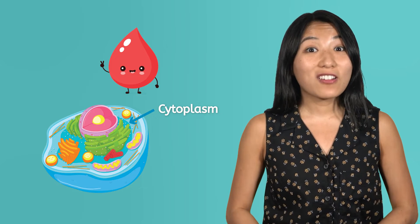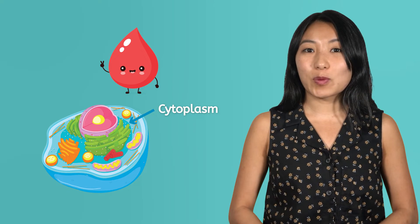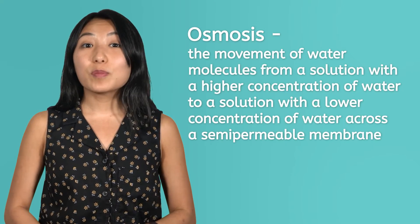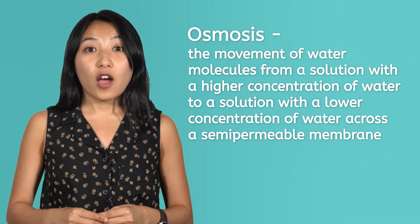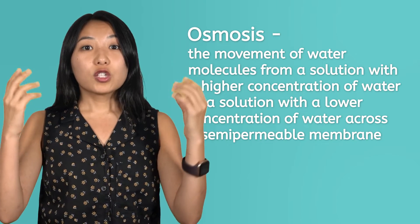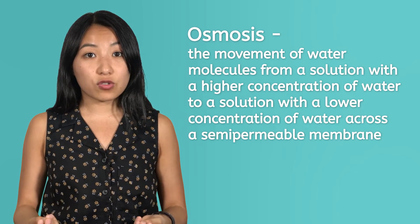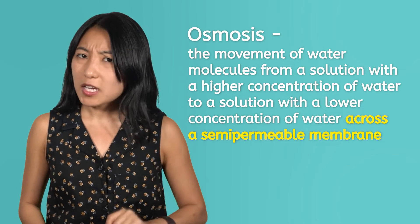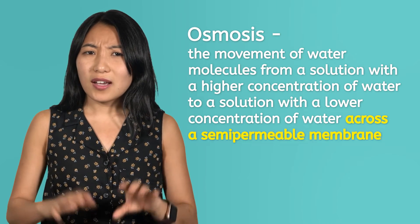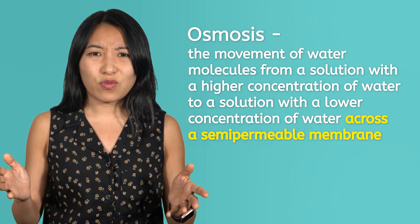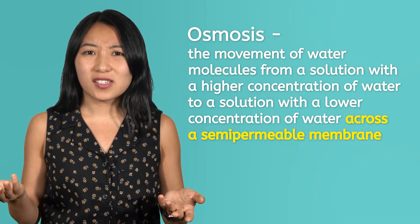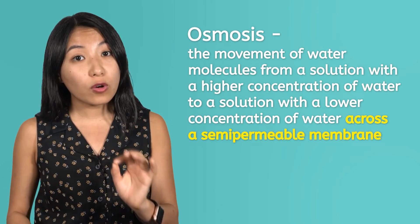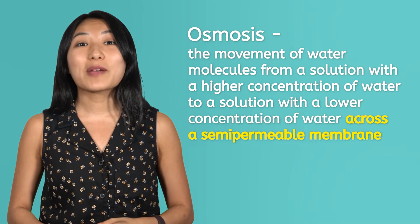Which brings us to our next topic and second form of passive transport: osmosis. Osmosis is the movement of water molecules from a solution with a higher concentration of water to a solution with a lower concentration of water across a semi-permeable membrane. Now, you might be asking yourself — wait, isn't that just diffusion of water? What's the difference? Well, whereas diffusion can occur anywhere, osmosis only occurs across a semi-permeable membrane.